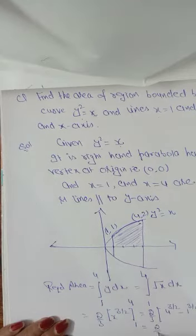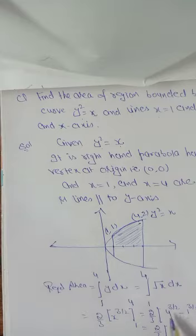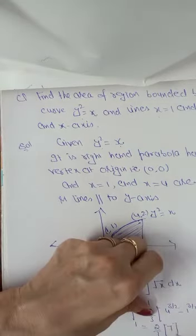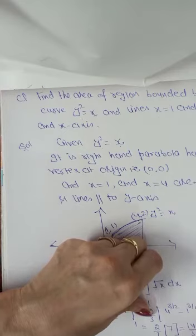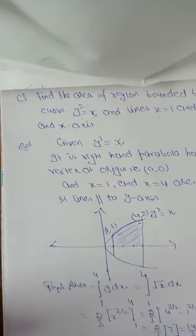So we have 2 by 3 into 4 power 3 by 2 minus 1 power 3 by 2. So basically it is 2 by 3. Now 4 power 3 by 2, 4 means 2 power 2, 2 and 2 cancel, 2 cube is 8, 8 minus 1 is 7. So we have 14 by 3 square units. Yeh dhyan rakhna hai apne square units likhna because area is always in square units.